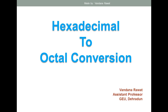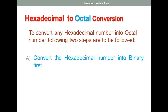Good morning everyone. The next topic is how to convert any hexadecimal number into octal. To do this, you first convert the hexadecimal number into binary, which was covered in the previous video lecture. Then you make groups of binary numbers in sets of three, and according to the octal-to-binary table, you convert all the binary sets into octal to get the final octal number.